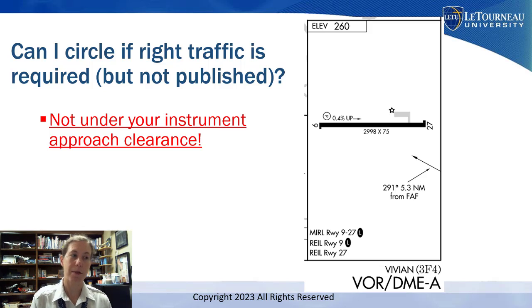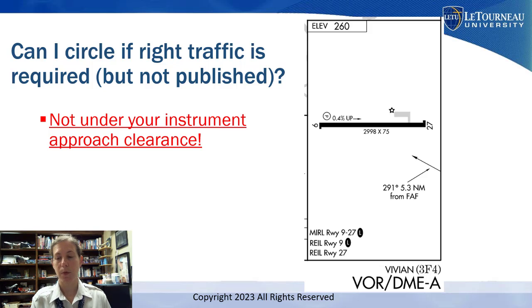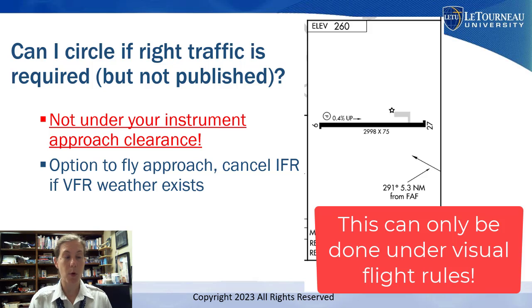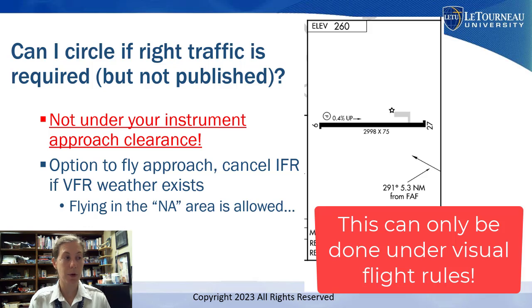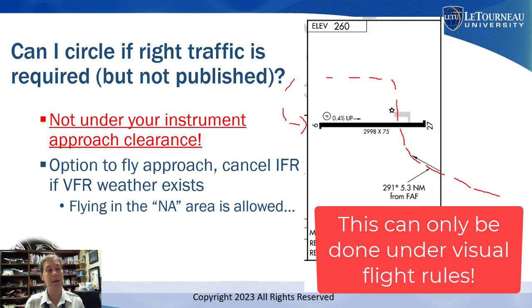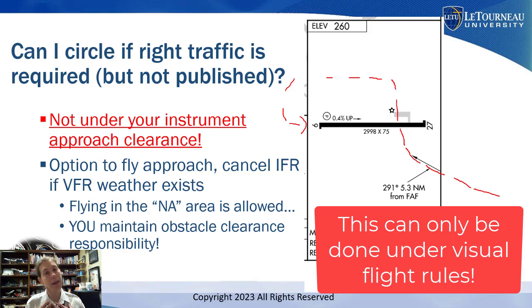The only workaround I've thought of and brainstormed with some more well-versed friends: you could fly the VOR DME approach at Vivian, hopefully get out of the clouds in time to cancel your instrument flight plan, and change over to VFR. If I'm operating under visual flight rules, I'm no longer bound by the not-authorized area. But I would have to maintain VFR cloud clearance and ceiling requirements, and if I fly over the airport into that area, I'm no longer doing a circle to land — and I as the pilot maintain obstacle clearance responsibility. As you saw in the video, there are some obstacles fairly close in to Vivian.